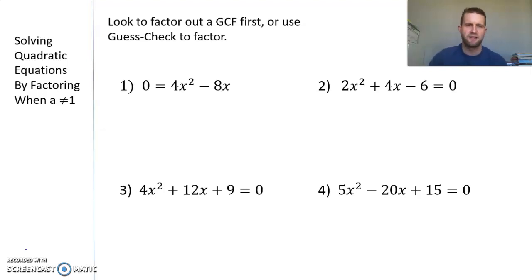We've got four examples on this slide, solving quadratic equations by factoring. For every example, we're going to look for a GCF first or use our guess-check method. Looking at number 1, we've got 0 = 4x² - 8x. With two terms, we use different methods besides trinomial pieces. First, look for a GCF between the two terms. I notice 4 goes into both 4 and 8, and each term has an x.